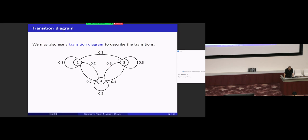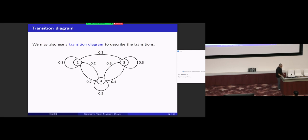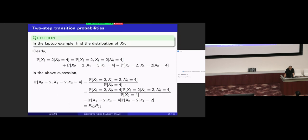In this example the transition matrix has each row corresponding to a state and each column corresponding to a state. For example, the entry 0.3 should be the transition probability from state 4 to state 3. You must be very clear about the meaning of this transition matrix. We can also use a transition diagram to represent the dynamics of a Markov chain — each circle stands for a state, and we use arrows with a number between 0 and 1 to denote the transition and the corresponding transition probabilities.